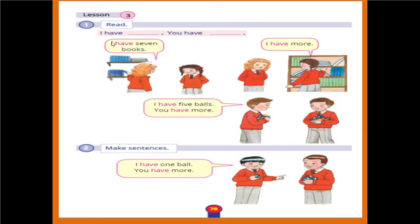In lesson three we say I have when I talk about myself, and when I talk about someone else we say you have. I have seven books — you have more. I have five balls — you have more. I have one ball — you have more.